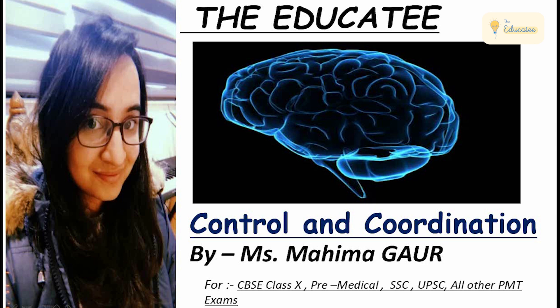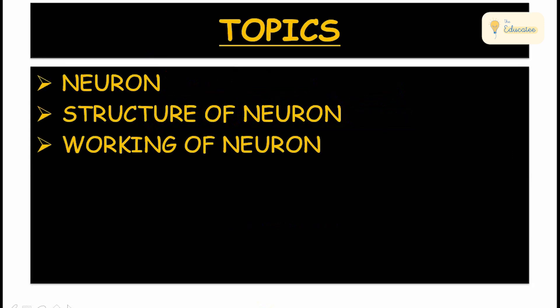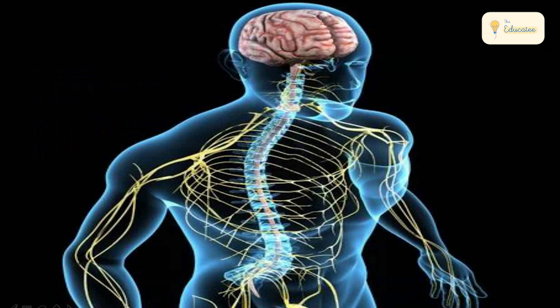Hello everyone, welcome to Educatees. This is Mahima Gaur, and today we are going to continue the chapter Control and Coordination. This is part 2. In the last video, we have seen about the nervous system — how it works like a manager, controlling coordination. Today what we are going to discuss is the Neuron, the unit of the nervous system — its structure and working. It is a very important topic.